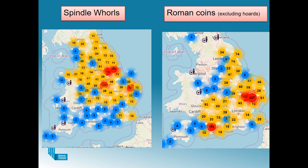When I look at a distribution map or statistics of some finds, I automatically look for patterns — not just patterns of where the archaeology occurs, but also where it doesn't occur, what's missing, and what that can tell us. These maps are the result of a simple search on the PAS data: one on spindle whorls and one on Roman coins excluding hoards, and they show quite different patterns. The mapping system shows the first 2,000 records, so it's not comprehensive, but it does show trends.